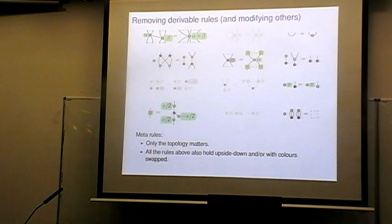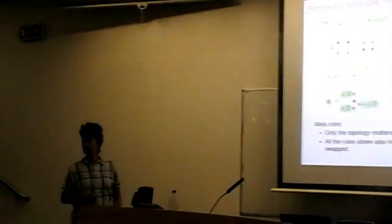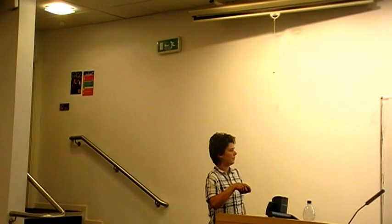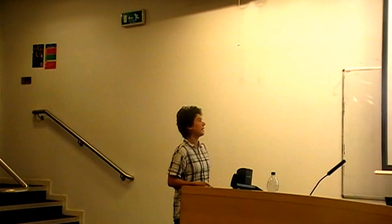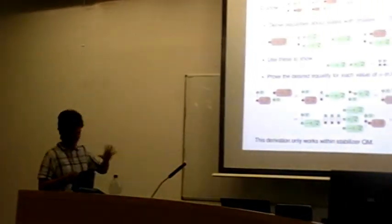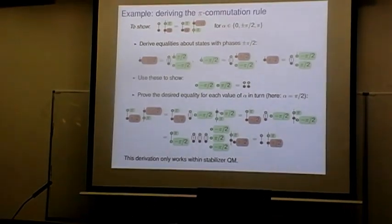In response to a question: yes, by convention the cap rule holds upside down and also for the other color. Some of these proofs are in fact really non-trivial. For the pi commutation rule, the proof that it can be derived from the others is quite intricate — we first derive various equalities between states with phase pi-by-2 in the different colors (the y-basis states expressed in terms of green and red spiders), then use those to show other scalar equalities, and finally derive the actual pi commutation.